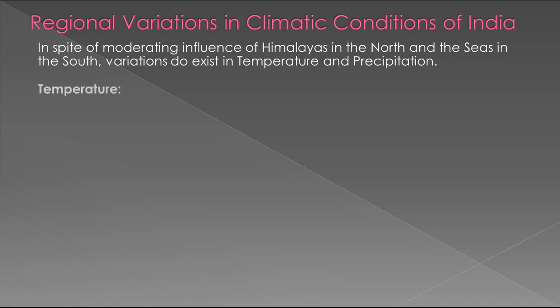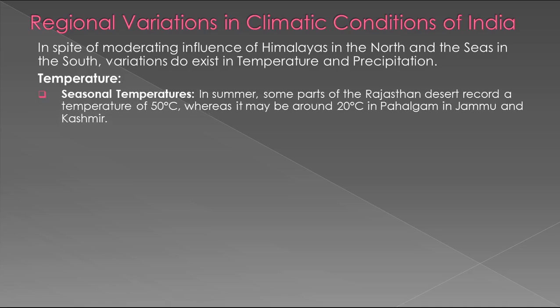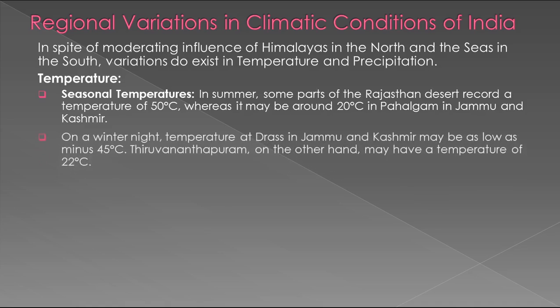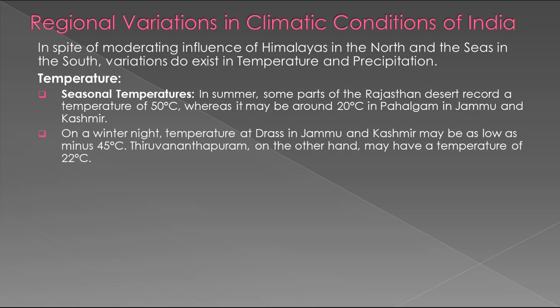Temperature — Seasonal temperature: In summer, some parts of the Rajasthan desert record a temperature of 50 degrees Celsius, whereas it may be around 20 degrees Celsius in Pahalgam in Jammu and Kashmir. On a winter night, temperature at Drass in Jammu and Kashmir may be as low as minus 45 degrees Celsius, while Thiruvananthapuram on the other hand may have a temperature of 22 degrees Celsius.